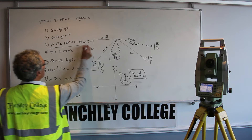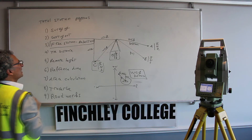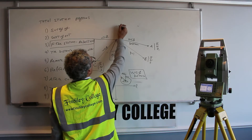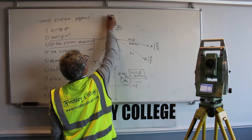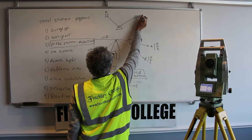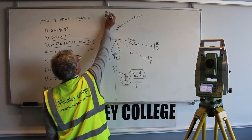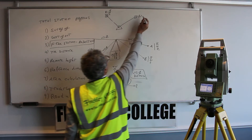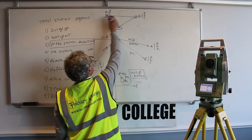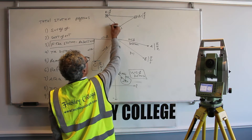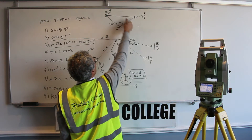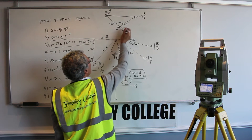The free station program is one of the most important programs with the total station. Your instrument is set up at a position, and you sight to a minimum of two known points — say R1 and R2 — which are retro targets with control points whose coordinates you know: easting, northing, and height for both. The instrument creates a triangle with itself as one point and the other two as the control points. You measure the distance to each, the instrument calculates the angle as you turn from one to the other, and it calculates its own position.